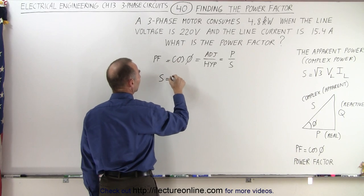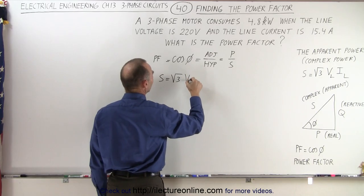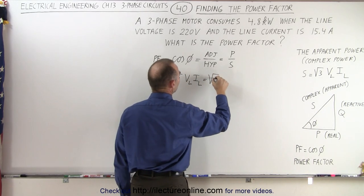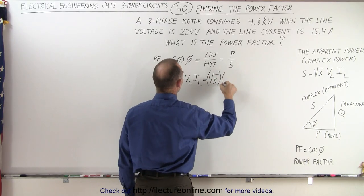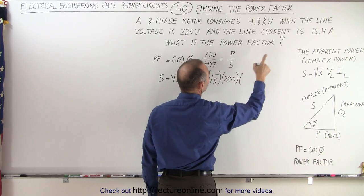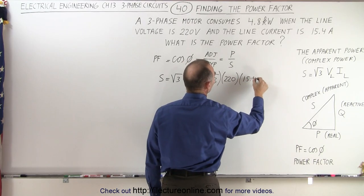The complex power is equal to the square root of three times the line voltage times the line current. In this case, that's the square root of three multiplied times the voltage. The line voltage is 220 volts and the line current was given to us as 15.4.